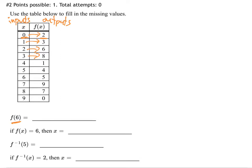F of 6: you put in 6, you get out 5 — just look at the table. And the next question says: what is x, what do you put in, to get out 6? The answer is 2. x being 2 makes an output of 6.